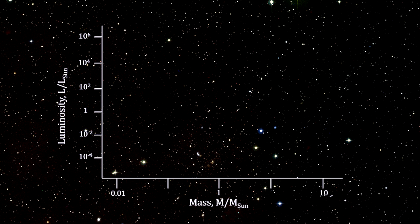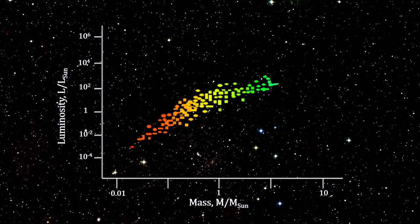Instead of having any combination of mass and luminosity, we see that stars fall in a line from low mass, low luminosity, to high mass, high luminosity.